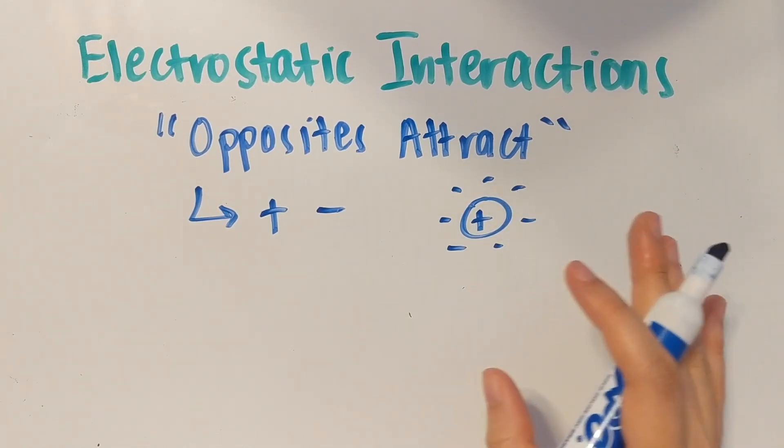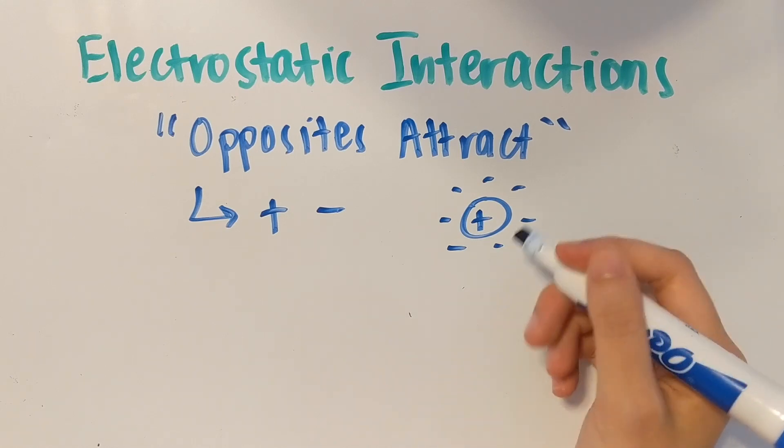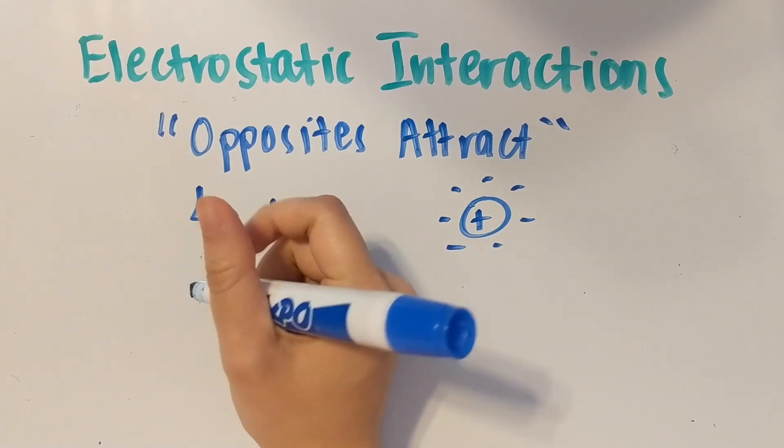That's why electrons in outer shells actually do not tend to stray away from the atom because of this electrostatic force of attraction.